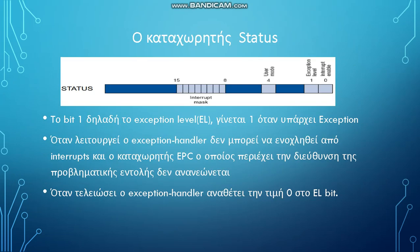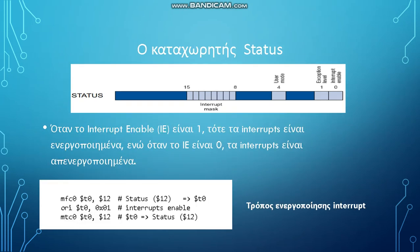Let's move on to the status register. Bit one, which is the exception level, becomes one when there is an exception. When the exception handler is running, it cannot be disturbed by interrupts and the EPC register, which contains the address of the problematic command, is not refreshed. When it ends, the exception handler assigns the value 0 to the exception level bit. Also, when interrupt enable has a value of 1, interrupts are enabled, and when it has a value of 0, the interrupts are disabled.